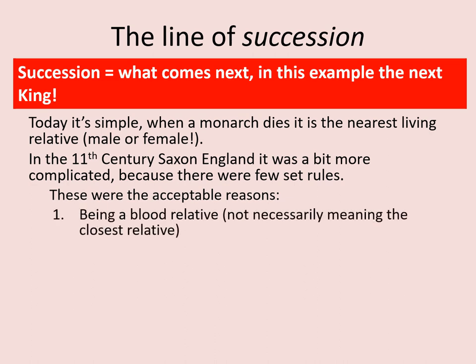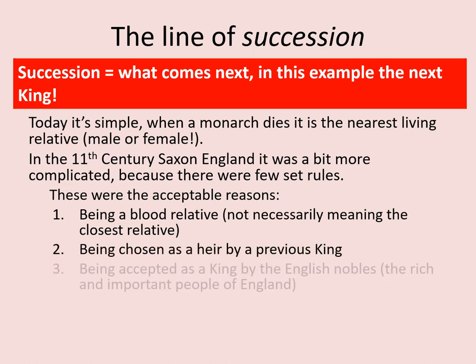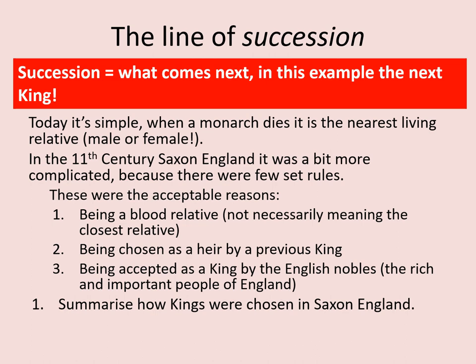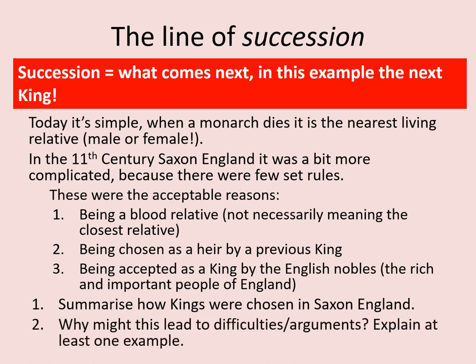Being a blood relative, although not necessarily meaning the closest or eldest relative; being chosen as the heir by a previous king; being accepted as king by the English nobles — as long as they agree, you'll have their support, and if you have their support, you've got the strength to rule. You could summarise how kings were chosen in Anglo-Saxon England and consider why this might lead to difficulties and arguments.